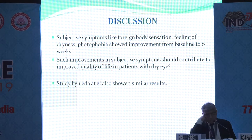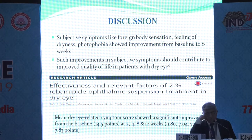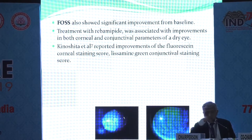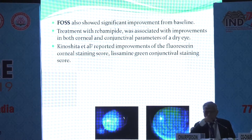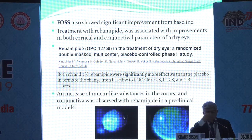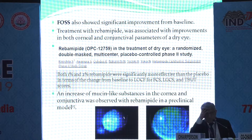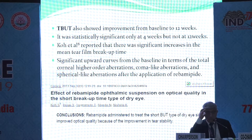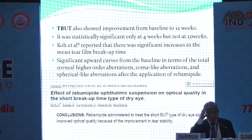This was compared to the study conducted by Uda et al., which showed that mean dry eye symptom score and fluorescent ocular surface staining showed significant improvement from baseline. Kinishita et al. also showed improvement, with both 1% and 2% Rebamipide successful in improving the fluorescent ocular surface score. An increase in mucin-like substance in the cornea and conjunctiva was observed in preclinical studies. Tear breakup time also improved, along with improvement in corneal higher order aberrations, coma-like aberrations, and spherical-like aberrations after application of Rebamipide.